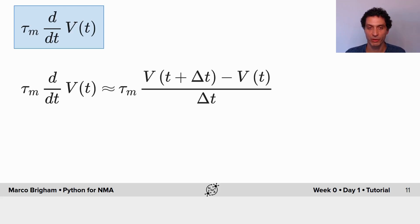So on the right side we don't have the derivative, but we have an approximation of the derivative.